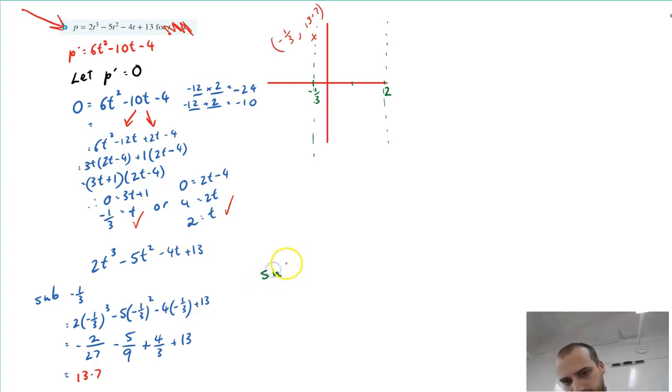So sub t equals 2 in. Now if I sub t equals 2 into that original equation, I get p equals 1. Really nice and neat there. So I get another one here at (2, 1).